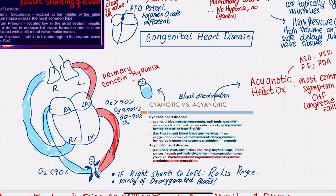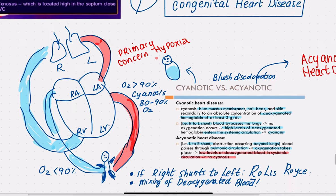What are the differences between cyanotic and acyanotic heart disease? The differences lie in the shunting — is the shunting right to left, or is the shunting left to right? This is really important to understand.